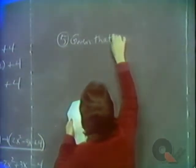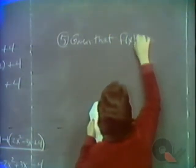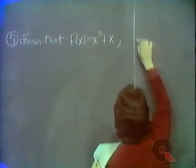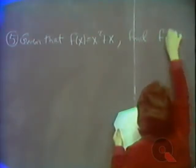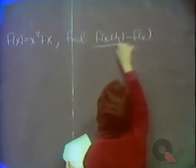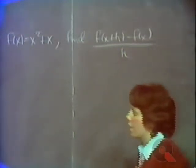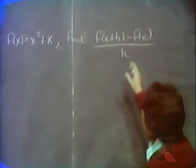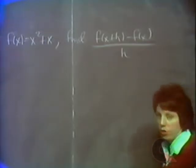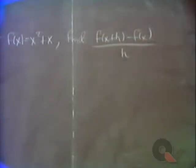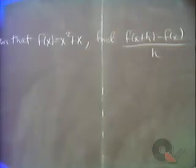Given that f of x is equal to x squared plus x, find f of x plus h minus f of x, all over h. This is similar to the last part of the preceding problem, except there we found f of x plus 2 minus f of x over 2, and here we're working with h, which is just some unknown. Don't let that bother you. The function has changed — it's now x squared plus x.